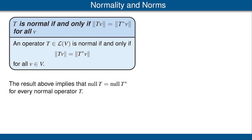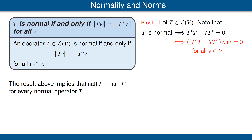Now let's look at the proof. Let T be an operator on V. T is normal if and only if T*T equals TT*, which can be written as T*T − TT* equals 0. The operator T*T − TT* is self-adjoint, as is easy to check, and thus that operator is 0 if and only if, when we apply it to any vector v and take the inner product with v, we get 0. Using additivity in the first slot, we can rewrite that as shown.